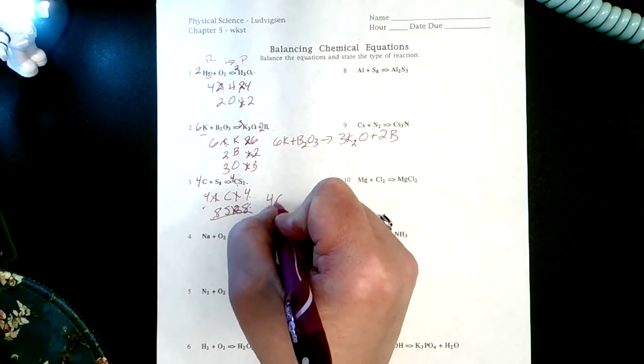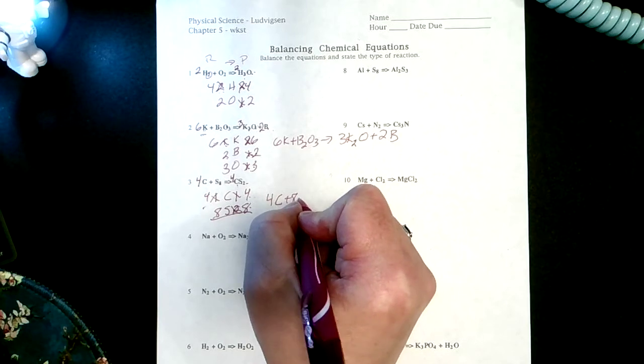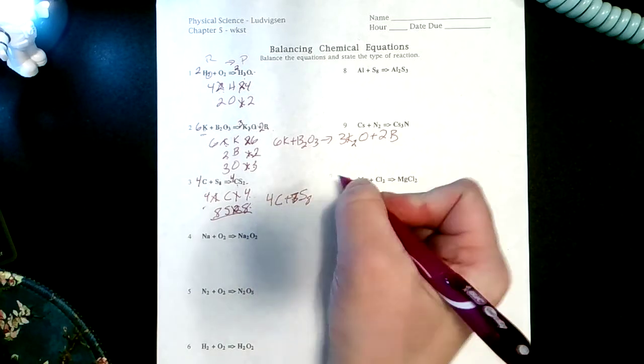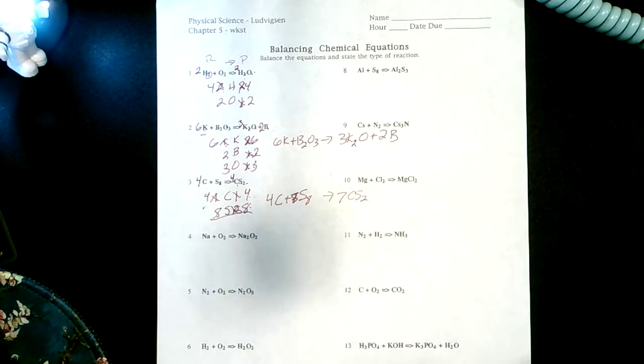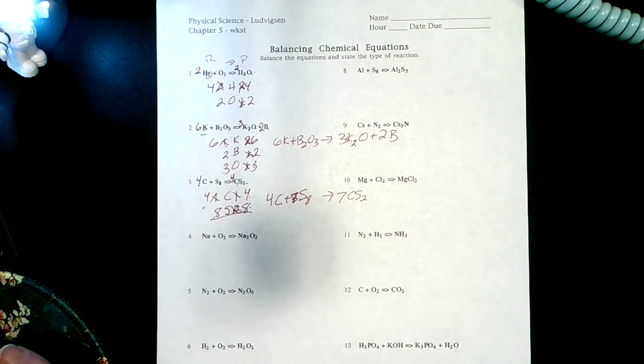Now four times one is four, four is four, eight is eight, and I'm balanced. My new formula is 4C plus S8 yields 4CS2, and that is a balanced equation.